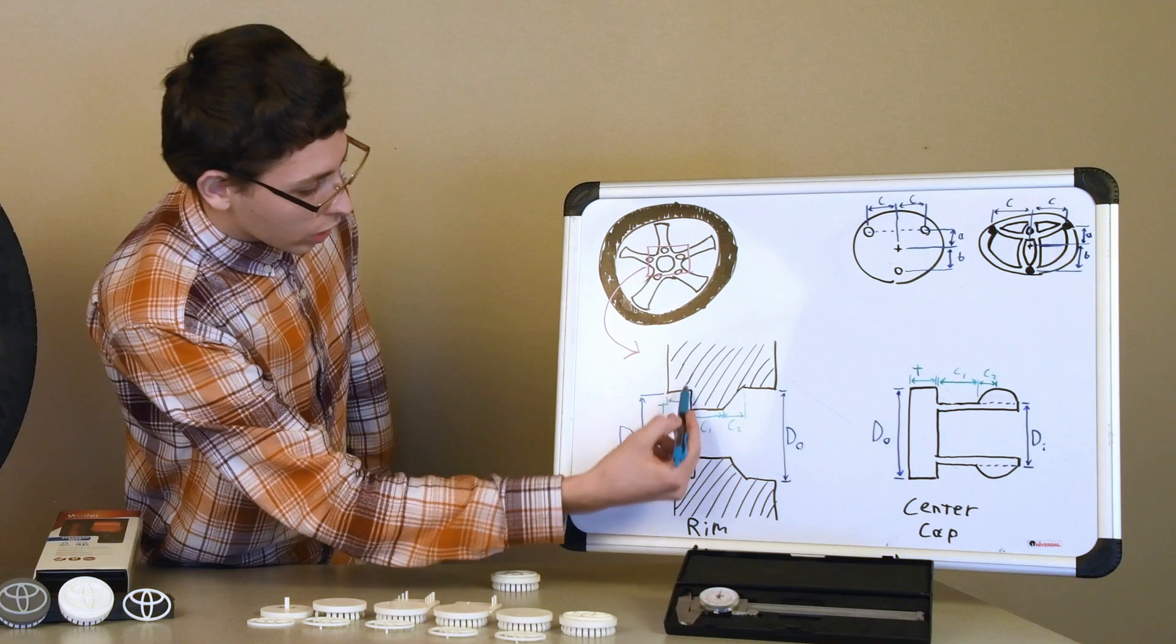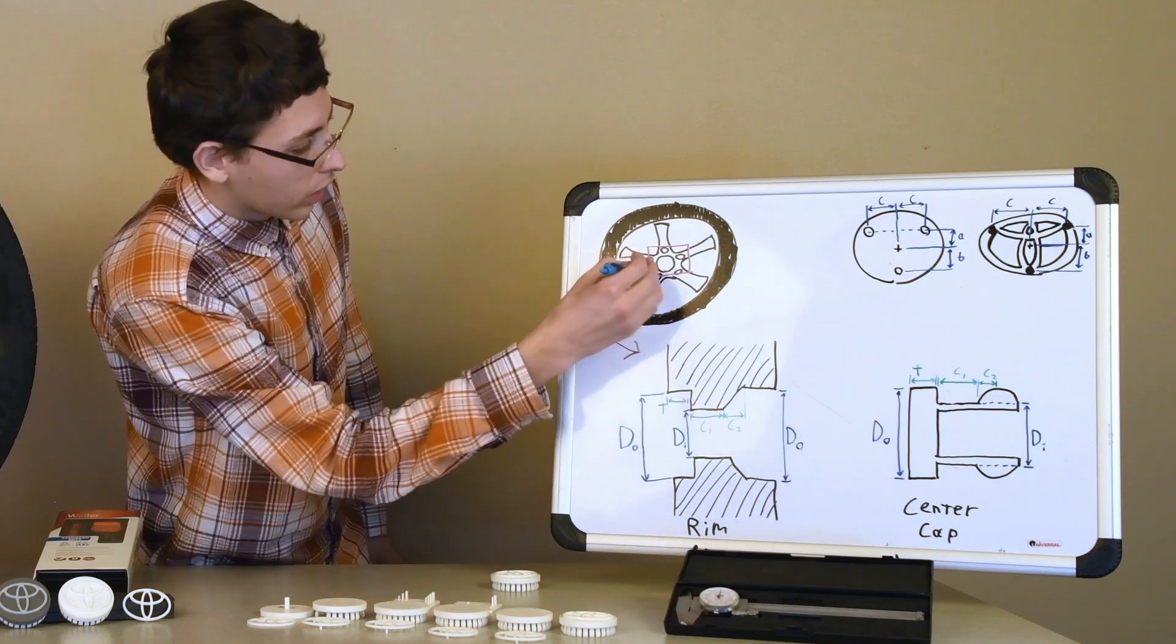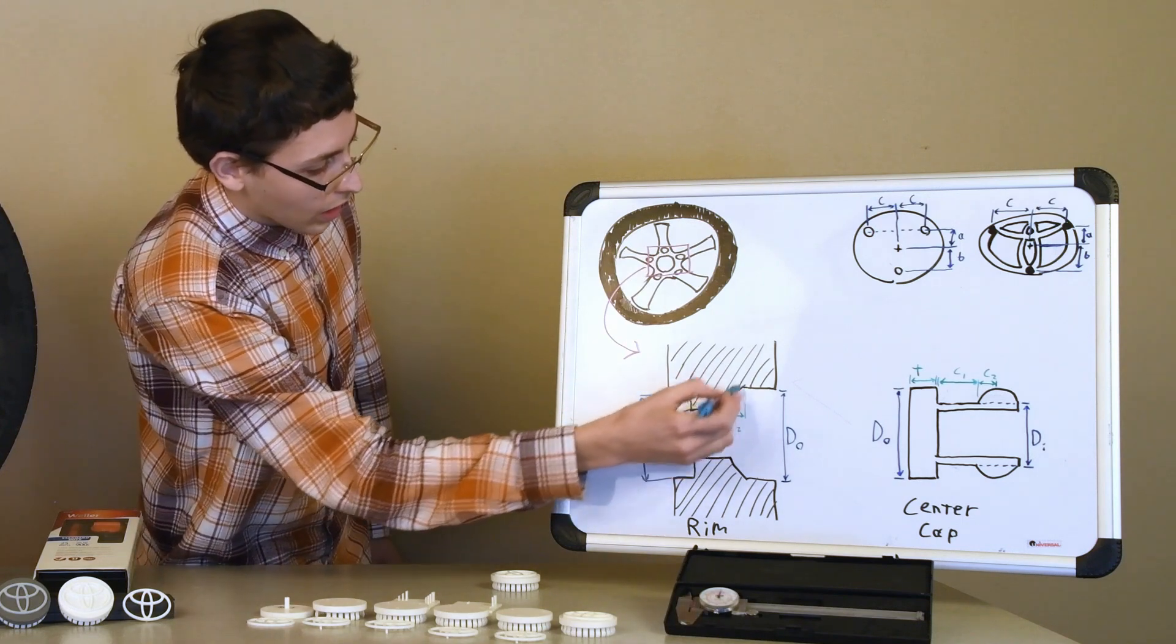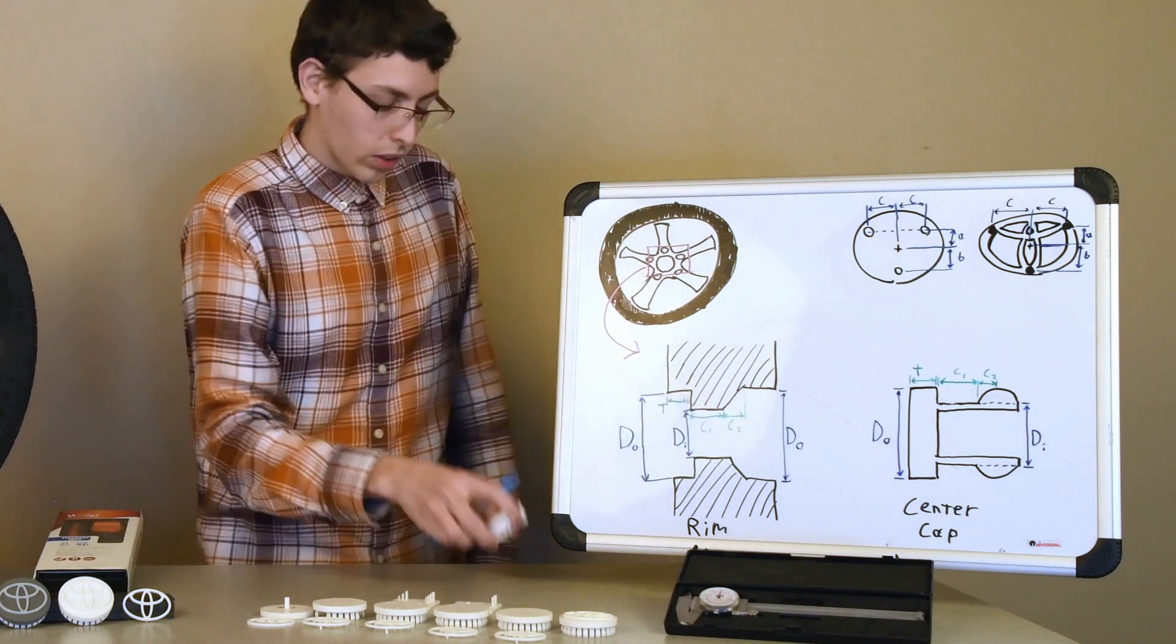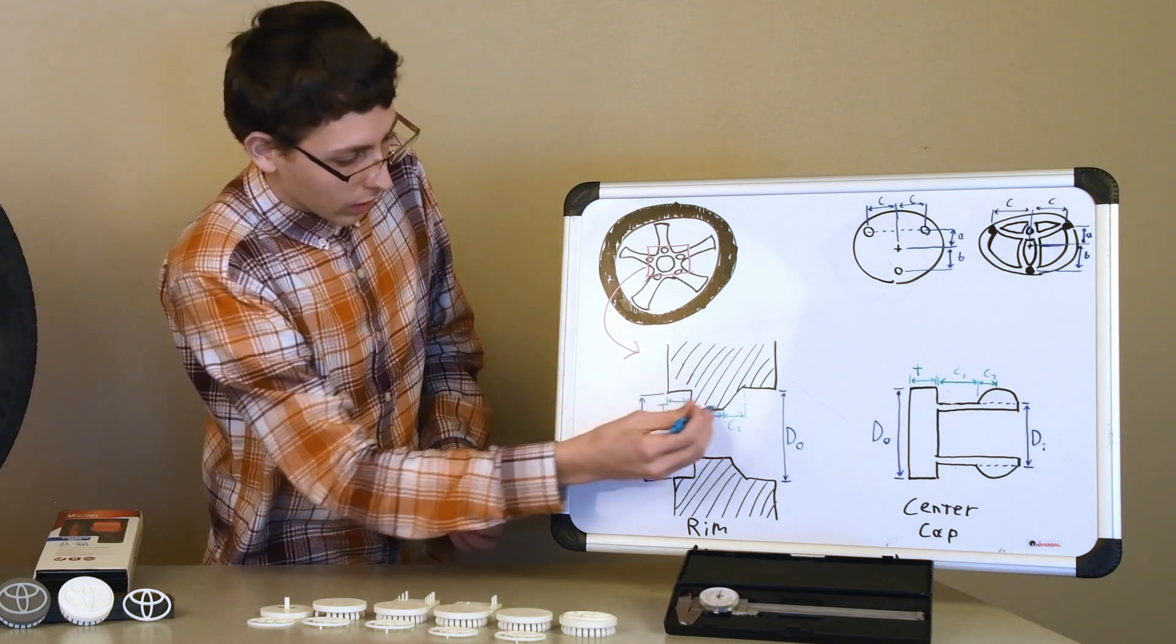And then you've got the shape of the attachment groove ring in the inside of the rim. And for mine, it's a flat face, and then it has an angled part in the back. So when the little tabs go on, they push over this flat area here,